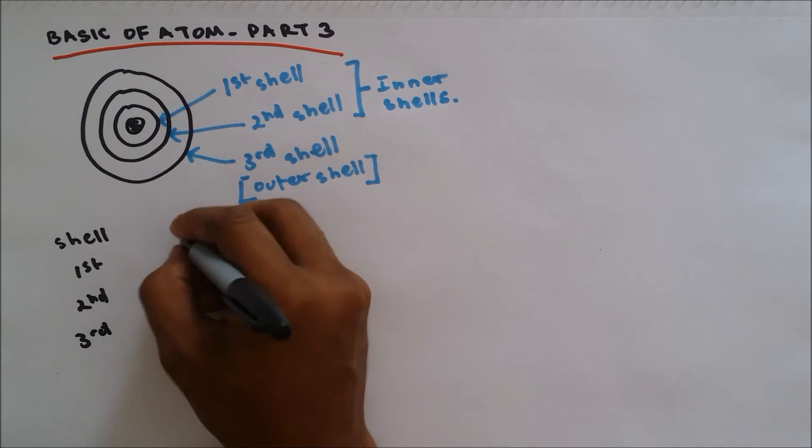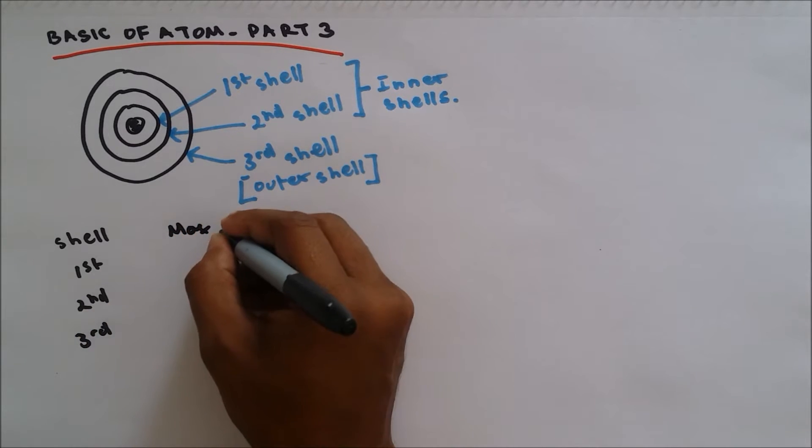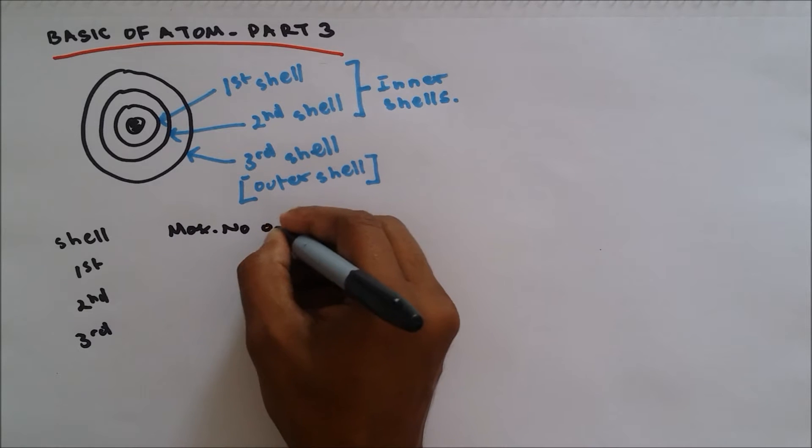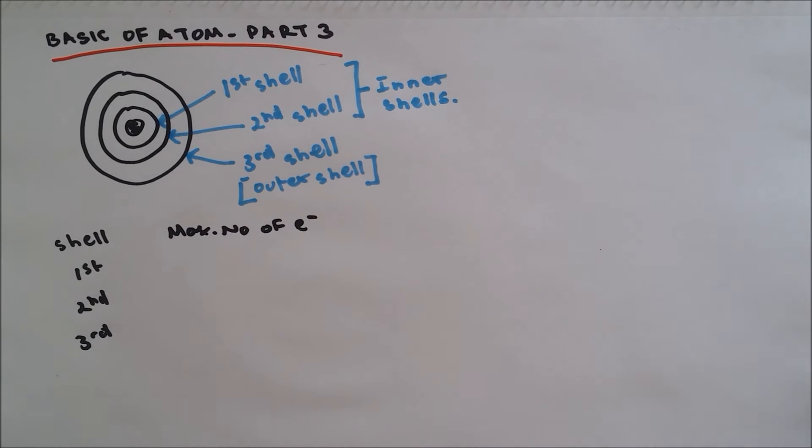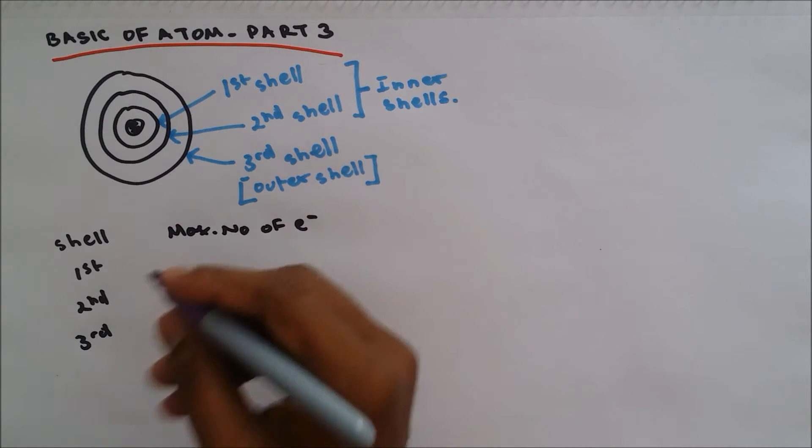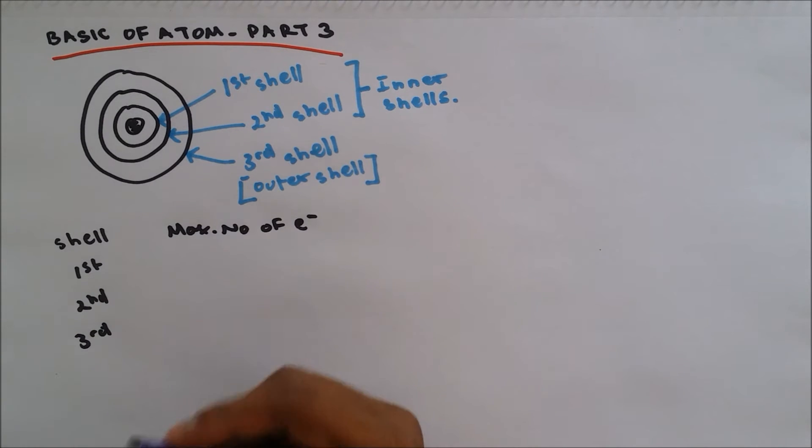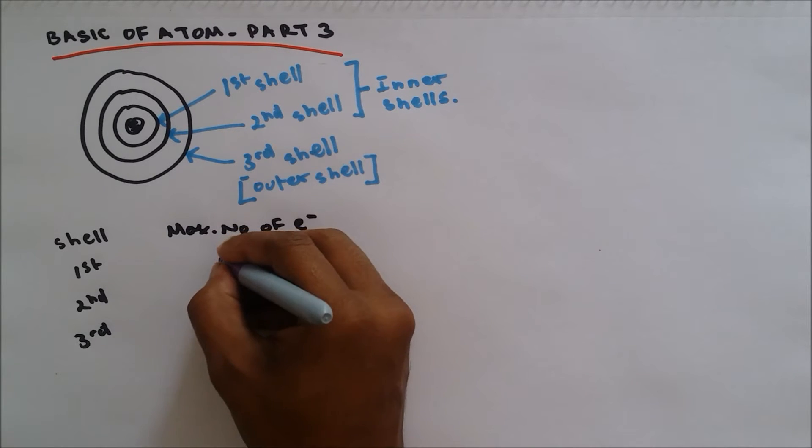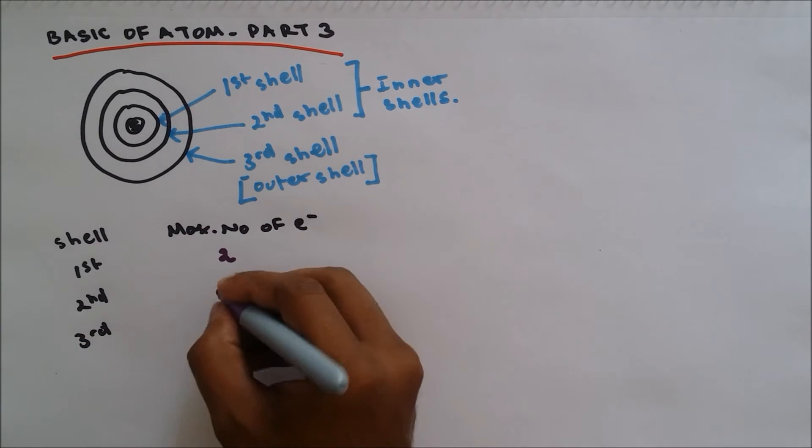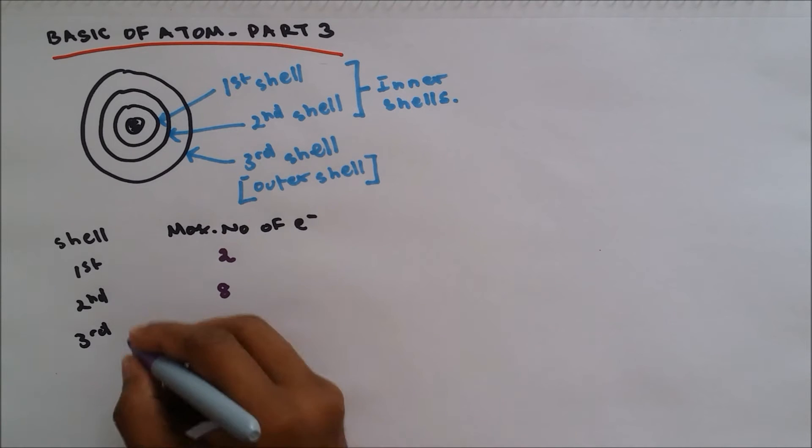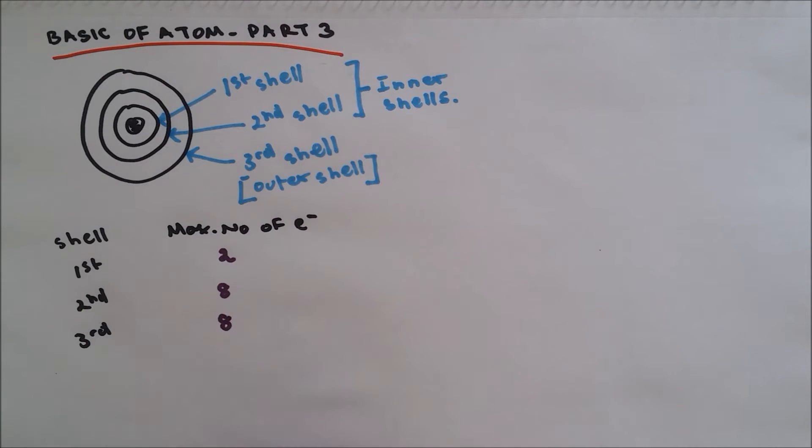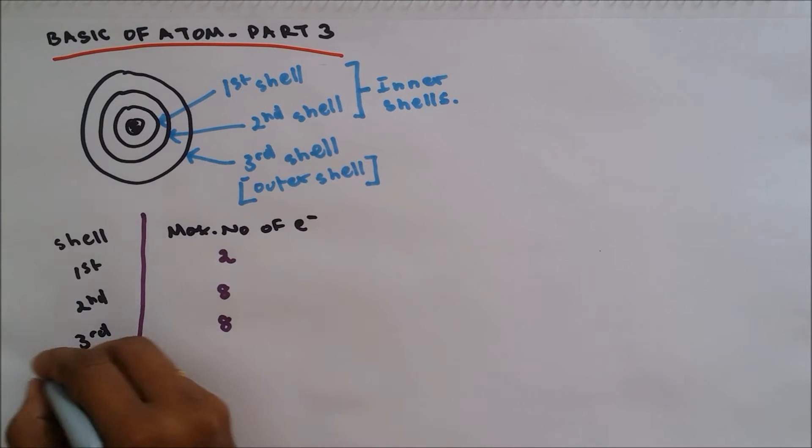Looking at shells, we have first shell, second shell, and third shell maximum number of electrons. The maximum number of electrons which can be found on the first shell is two, on the second shell is eight, and on the third shell is eight, because it's the rule.